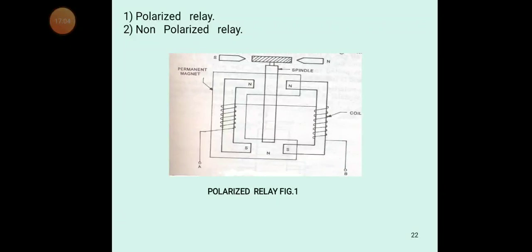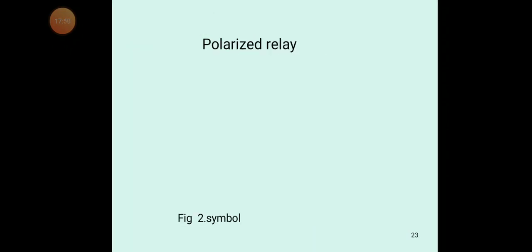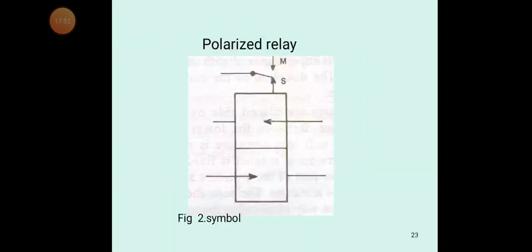Now we discuss the second classification — polarization. We have two types: polarized relay and non-polarized relay. In the polarized relay, you can see the figure — there is a permanent magnet with south and north poles, and coils. The magnetic effect of the permanent magnet is superimposed with the magnetic effect of the operating current. The direction of the current determines the position of the armature.